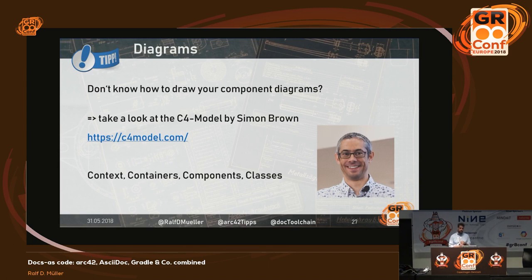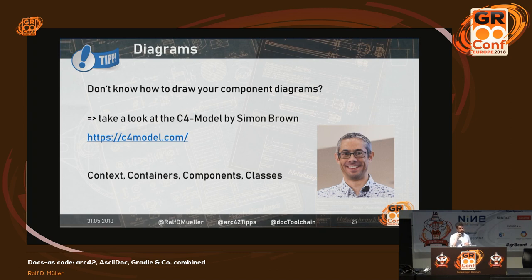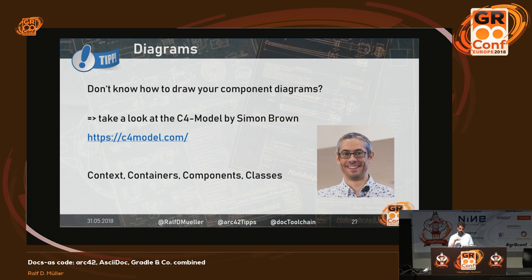If you haven't found your style for diagrams yet, the C4 model created by Simon Brown is very useful. You start with a context diagram where your system is in the middle with just the connected systems around it. Then you drill down to a container diagram showing all the containers your system consists of, then a component diagram for the components within containers, and finally the classes.